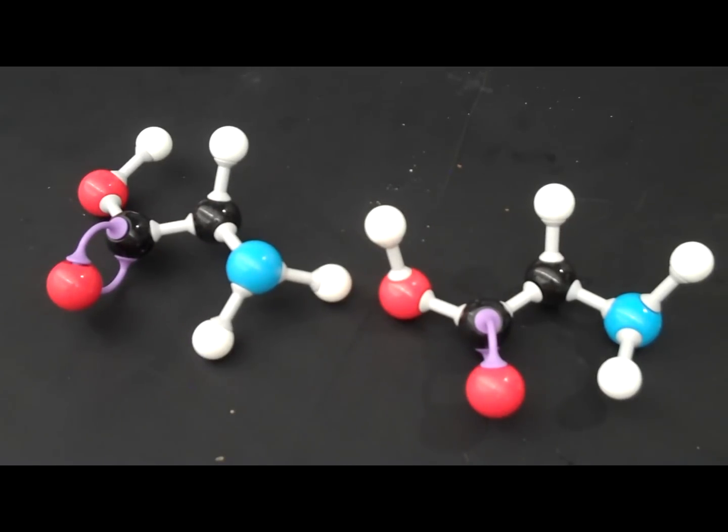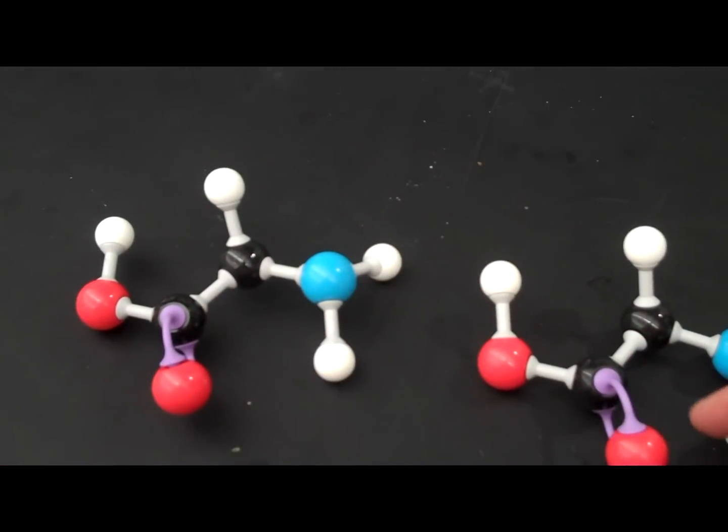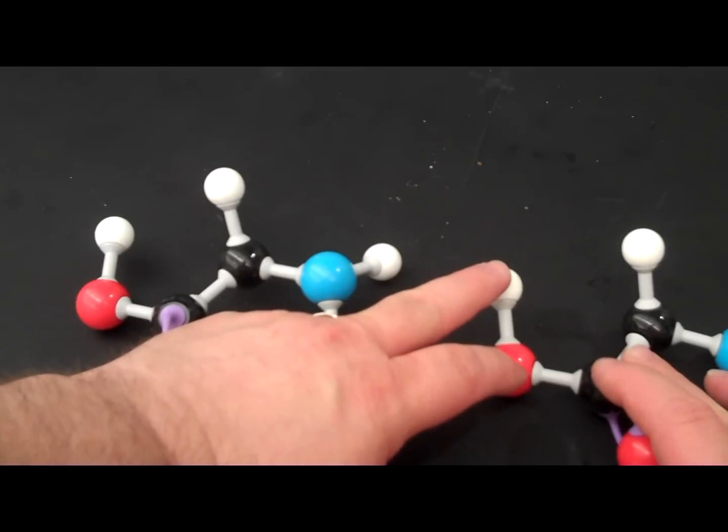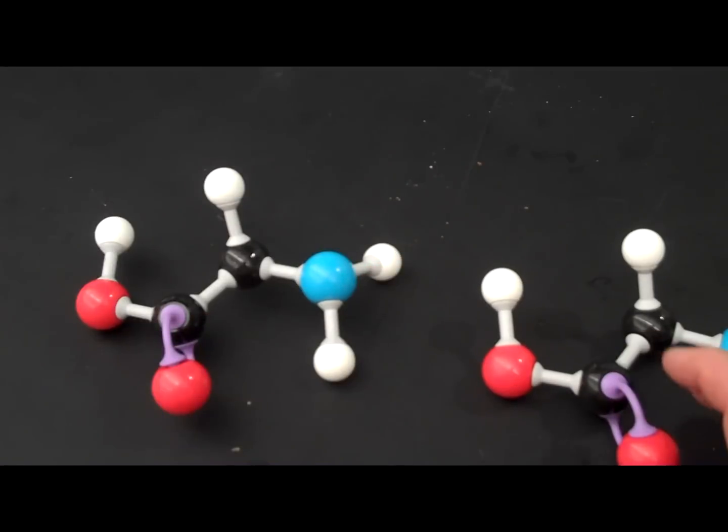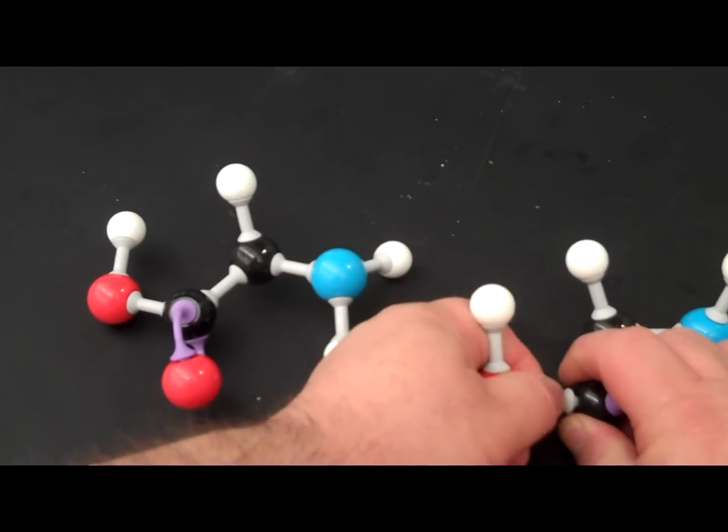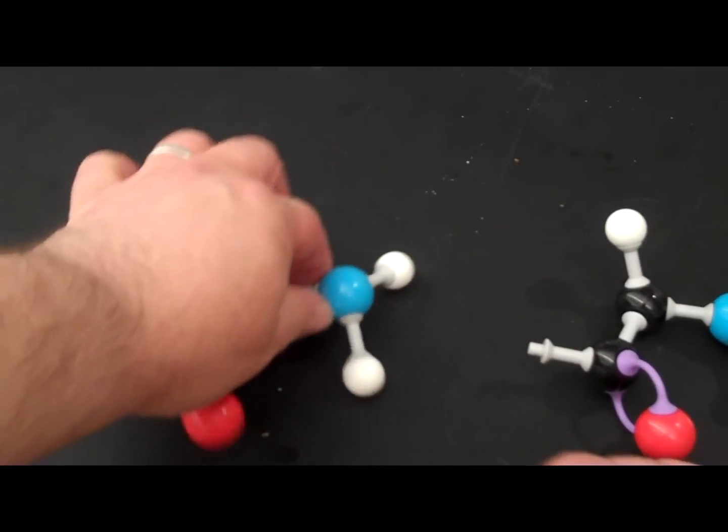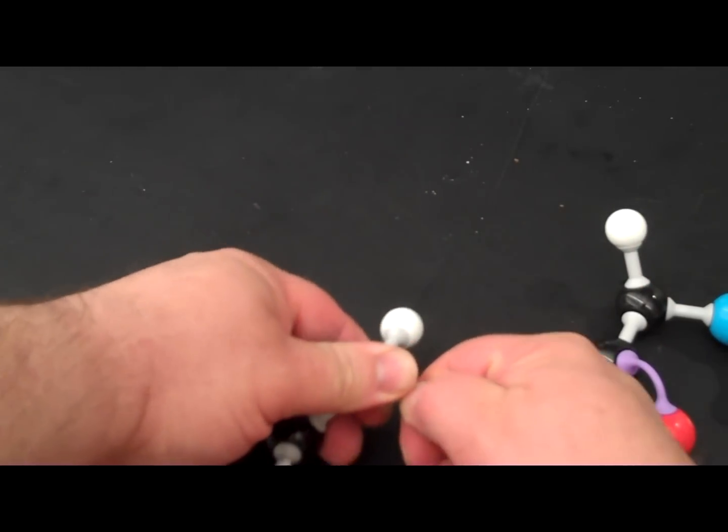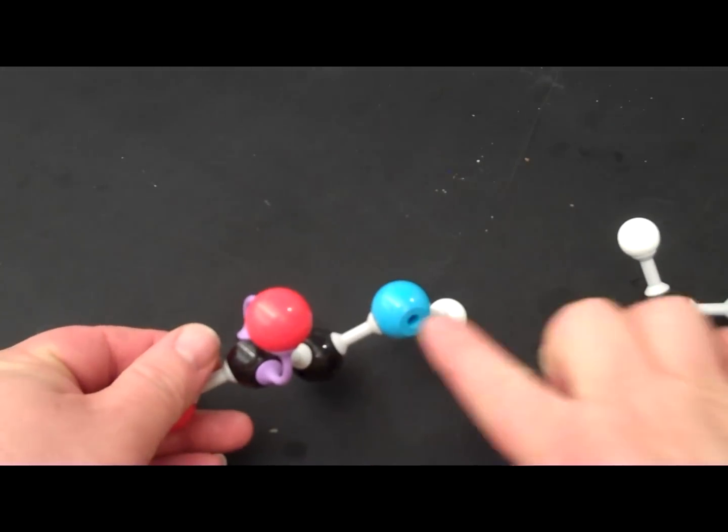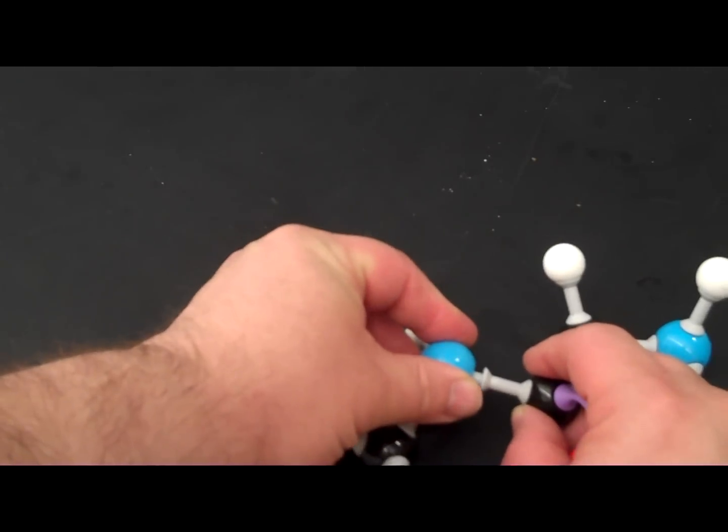To do this, we're going to remove the H and the O from the carboxyl group, and we're going to remove a hydrogen from the amine group. This gives us a spot here to attach and a bond there, so we're going to attach these two together at that point.